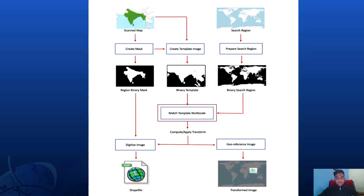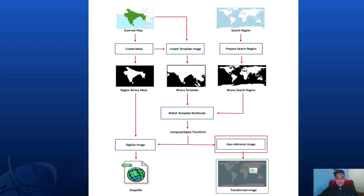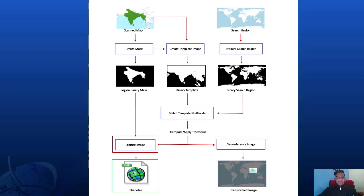Once we have the output from Create Template Image and Prepare Search Region, we use Match Template Multiscale to locate the binary template on the search region. After that we apply some transformation and compute the real-world coordinates with the help of the Geo-Reference Image API, which generates a transformed image with a coordinate file that can be directly used with ArcGIS Pro. Similarly, we use Digitize Image for generating a shapefile that is used to locate the scanned map on the search region.